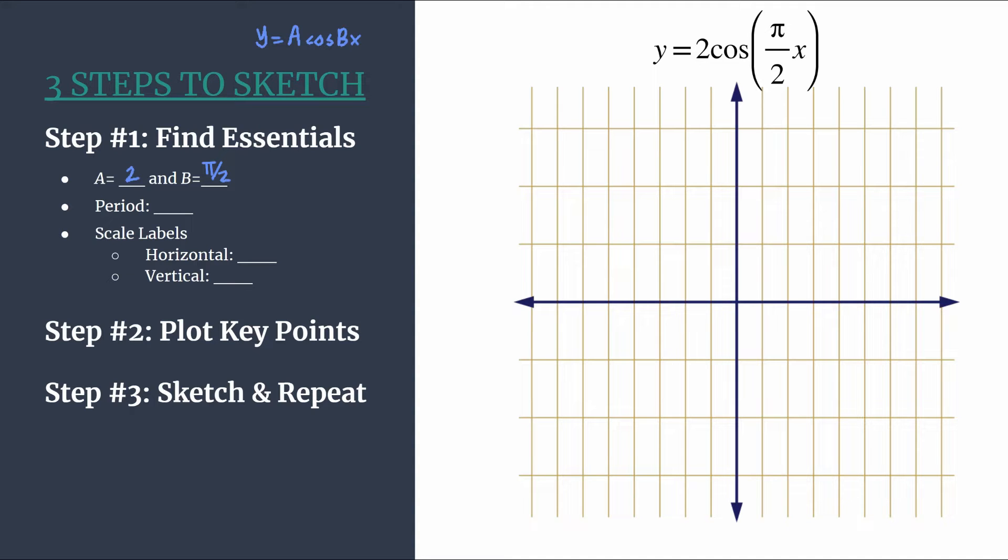Now while that looks a little bit funny, if you just calculate 3.14 divided by 2, or maybe you just know that off the top of your head, you know that's about one and a half. And so b, remember, tells us how many cycles happen between zero and 2 pi. So we should have about one and a half.